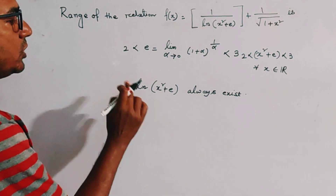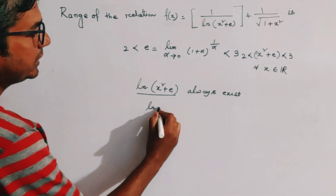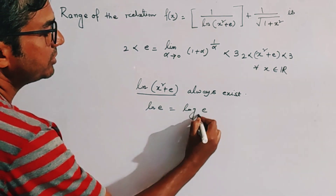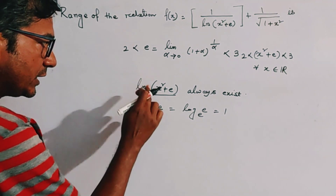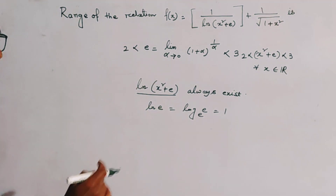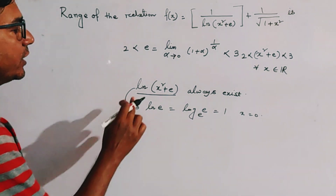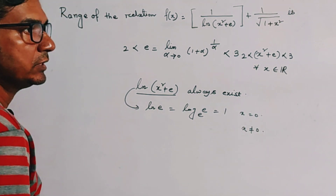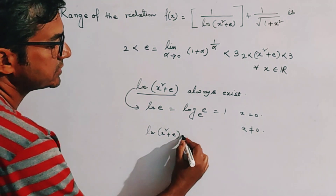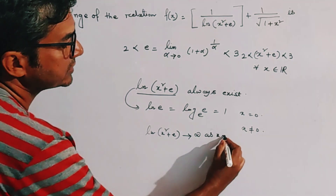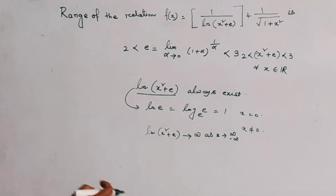The lowest value of this function is ln(e) = 1, which occurs when x = 0. As x tends to infinity or minus infinity, x²+e tends to infinity because x² is always a positive number, so ln(x²+e) is an increasing function greater than or equal to 1.